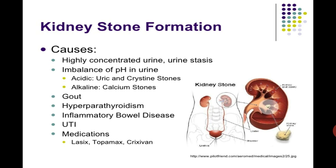Cysteine stones are caused by a rare disorder called cystinuria. This disorder causes a natural substance called cysteine to leak into the urine. When there is too much cysteine in the urine, kidney stones can form. These stones can get stuck in the kidneys, bladder, or anywhere in the urinary tract. Alkaline material may include calcium stones.